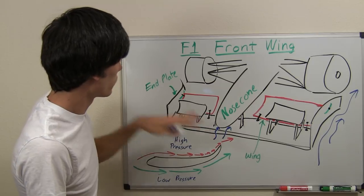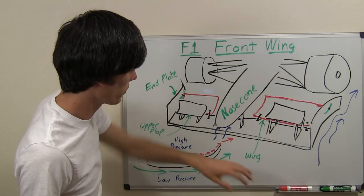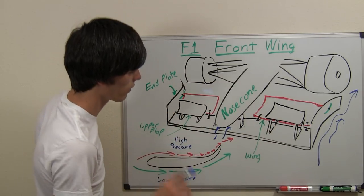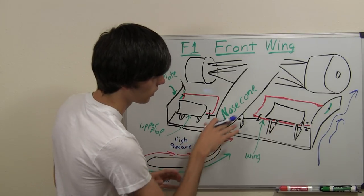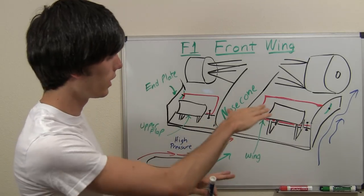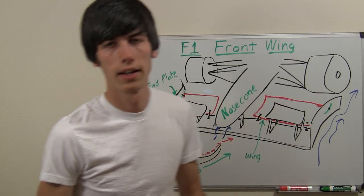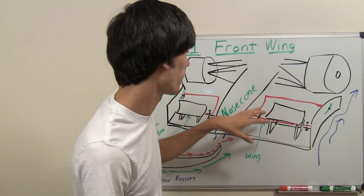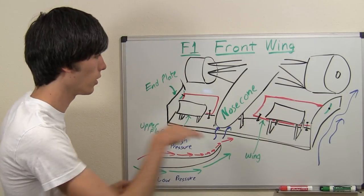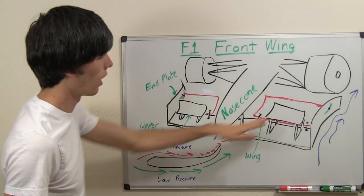So the nose cone - the air flowing in from the front - the purpose is to send that air underneath the car and send it back clean to the diffuser. I'm going to make a separate video on the diffuser and the purpose of that, but just understand that the purpose of this nose cone is to get the air to flow underneath the vehicle.